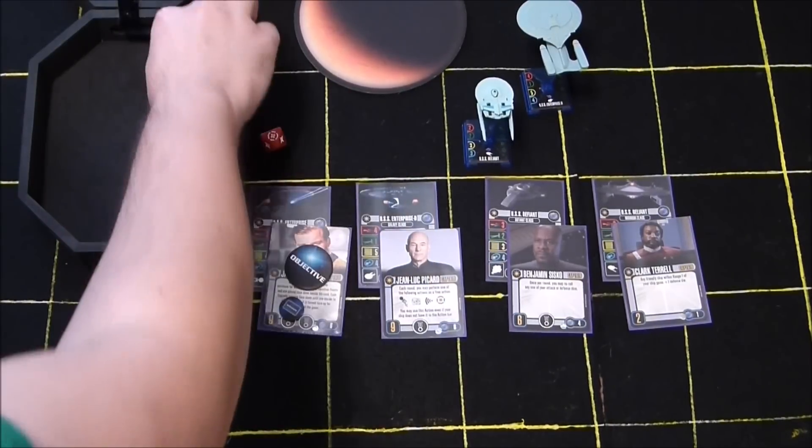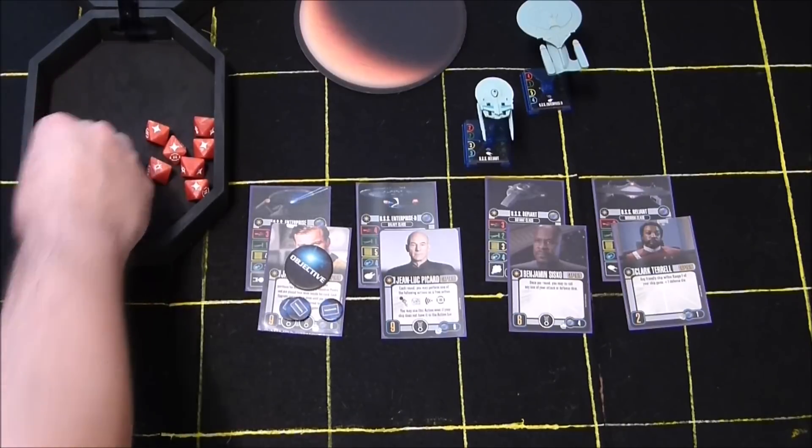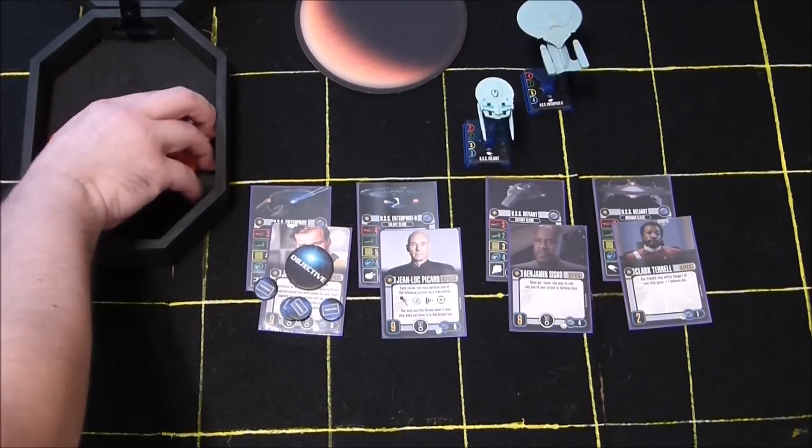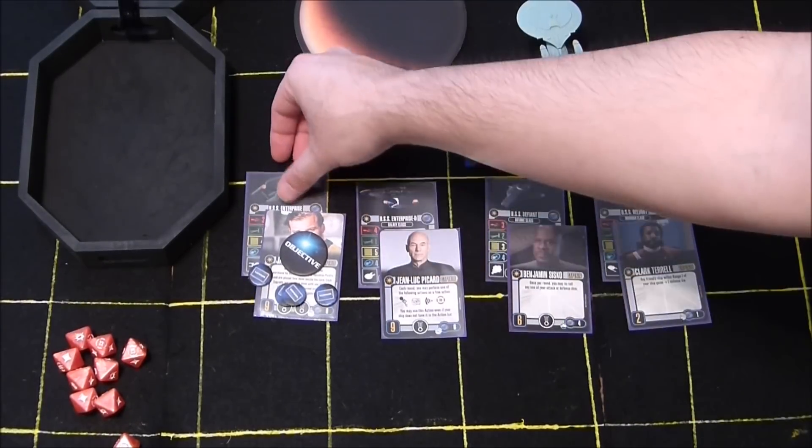However many of these dice come up battle stations yields one raw materials token for the captain you rolled for. These raw materials tokens will be used later during the captain's battle to determine how many attack dice that captain will be rolling in combat.